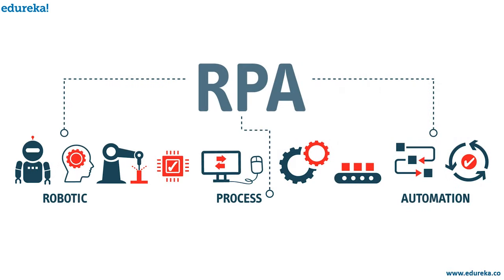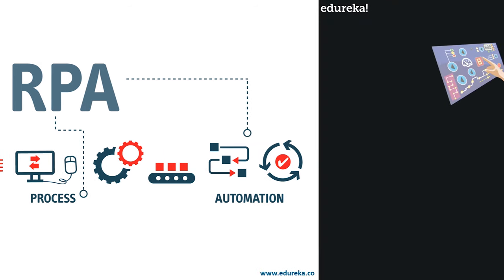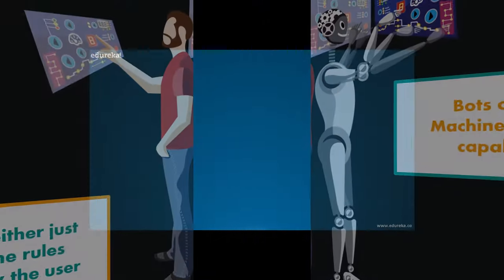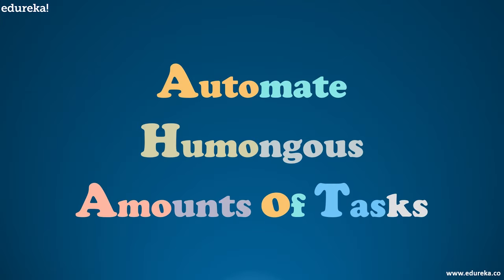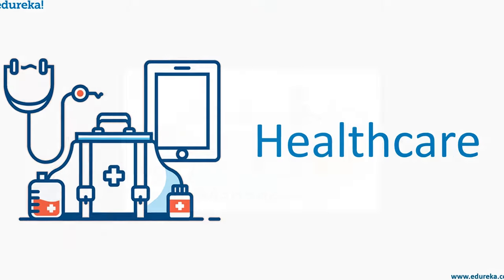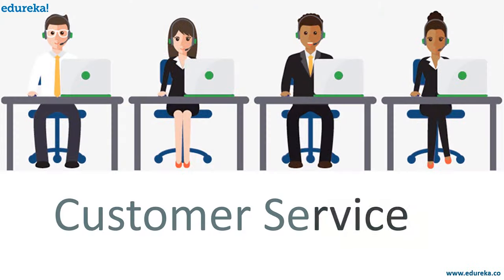Robotic Process Automation, or RPA, is the process of automating tasks or processes with the help of robots or software to reduce human intervention. These bots can either follow rules defined by the user or use machine learning capabilities to suggest recommendations and generate meaningful results. RPA can also be used to automate a humongous amount of tasks in fields such as human resources, financial services, healthcare, supply chain management, and customer service.